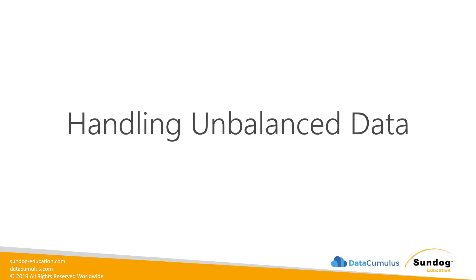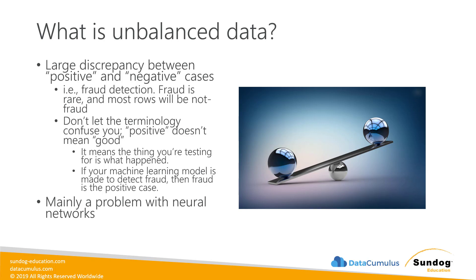Another problem in the world of feature engineering is handling unbalanced data. That's when we have a large discrepancy between our positive and negative cases in our training data. A common example is in the world of fraud detection. Actual fraud is pretty rare, so most of your training data is going to contain rows that are not fraudulent. This can lead to difficulty building a model that can identify fraud, because it had so few data points to learn from compared to all the non-fraud data points.